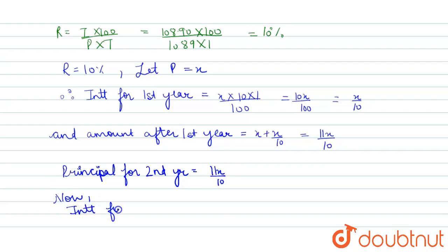Interest for the second year equals, we are having principal as 11X/10 times rate 10% times 1. So that equals 11X/100.